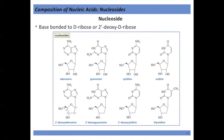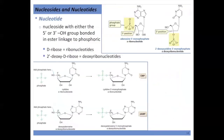Here are the nucleosides: adenosine, guanosine, cytidine, and uridine. The deoxy forms at the bottom are indicated as two-prime deoxyadenosine, two-prime deoxyguanosine, two-prime deoxycytidine, and thymidine. We don't need to put 'two-prime deoxy' for thymidine because thymine is only found in DNA. Nucleosides have two parts, but nucleotides actually have three.